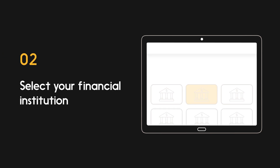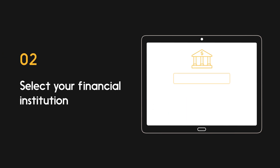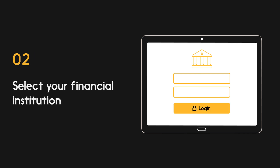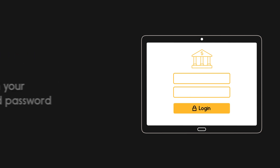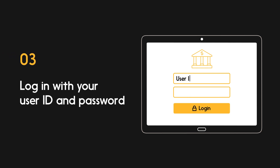Select your financial institution from the list provided. You'll be redirected to the financial institution's online banking login page. Complete the login process by entering the username or user ID and password you use when you sign in to online banking. It's important to note that Interac doesn't have access to this information.